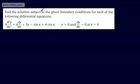We'll also find the solution subject to the given boundary conditions for each of the following differential equations. This one is 4d²y/dx² + 4dy/dx + 5y = sin x + 4 cos x. These are the boundary or initial conditions: y = 0, dy/dx = 0, and x = 0.